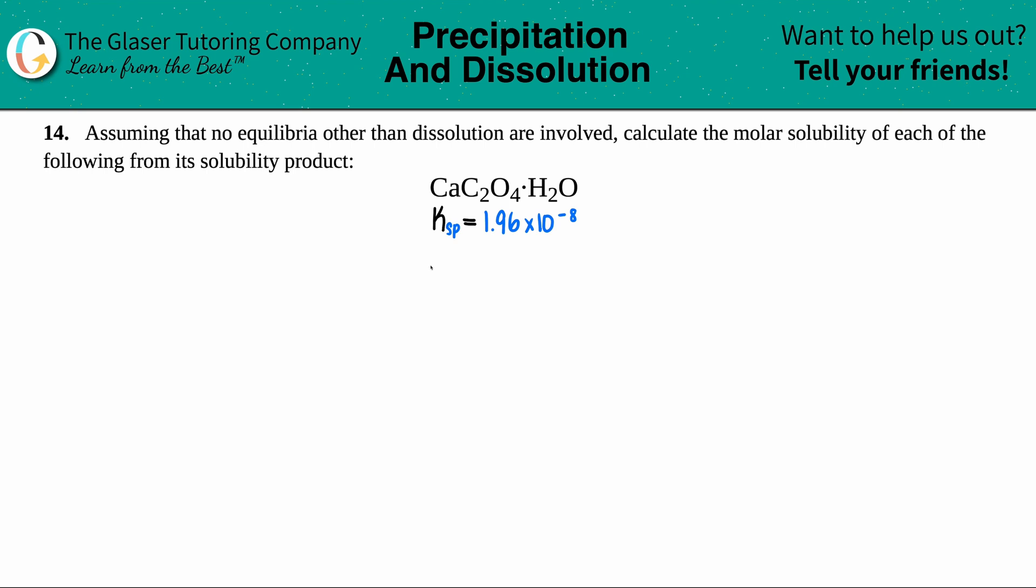Number 14, assuming that no equilibria other than dissolution are involved, calculate the molar solubility of each of the following from its solubility product.